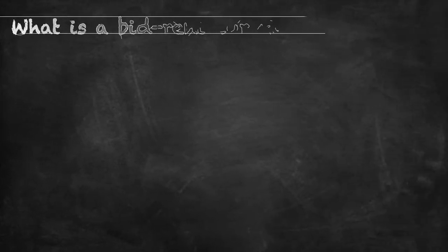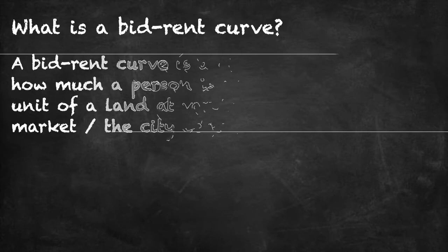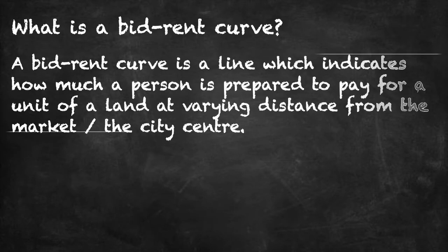This brings us to the bid-rent curve. The bid-rent curve is a line which indicates how much a person is prepared to pay for a unit of land at varying distances from the market or from the city centre.